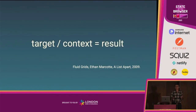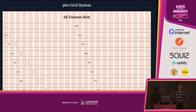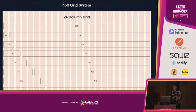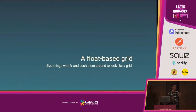We started to get layout frameworks. They started off pretty simple — this is from the 960 grid system. Loads of people were using this, copying and pasting it into designs, so we didn't have to worry about maths. Then we got things like Bootstrap. Under the hood, anything using a float-based grid was doing the same thing: sizing things in percentages and pushing them around so they looked like a grid.